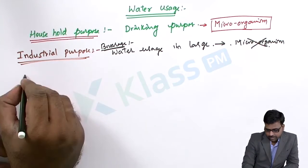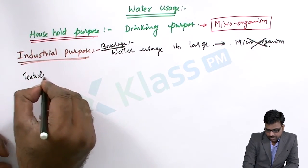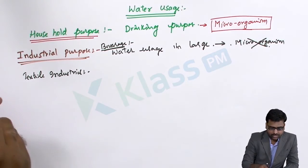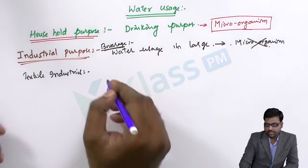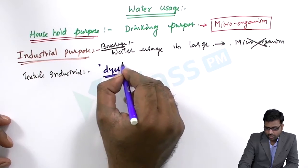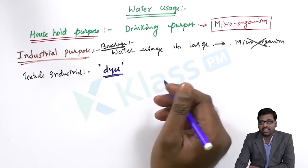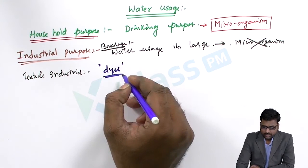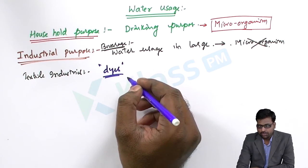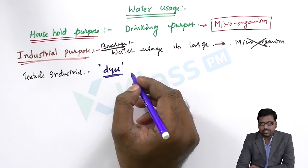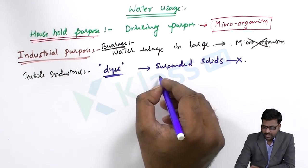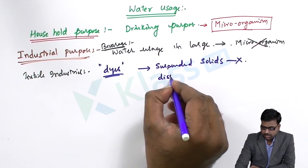In textile industries, water is used for dyeing purposes — to clean the dyes or to spray dyes onto the cloths. Water used in textile industries should not contain suspended solids as well as dissolved solids.